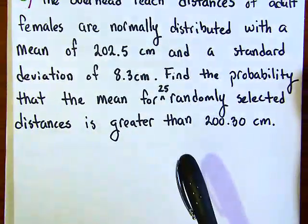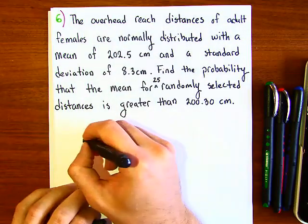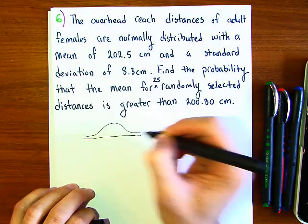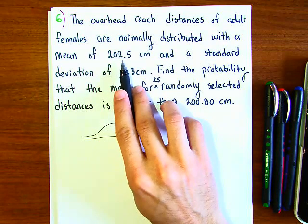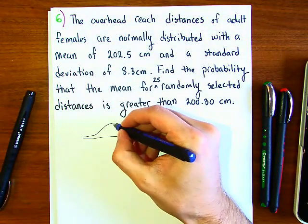So it'll look something like this, right, with a mean of 202.5. If you have a mean of 202.5, that will be your center. So this is 202.5 centimeters.